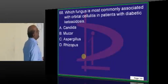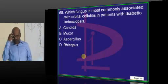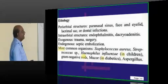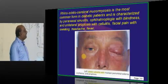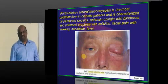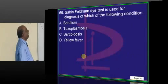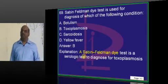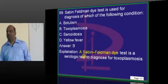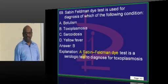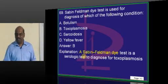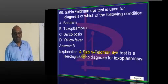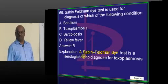The Australian antigen is HBsAg. Orbital cellulitis is most commonly due to mucormycosis, especially in diabetic individuals. The Sabin-Feldman test is typically done in toxoplasmosis — it is not typically done now; there are many serological improvements in diagnosing toxoplasma. Nobody is doing the Sabin-Feldman test, but it will be given as a quiz question.